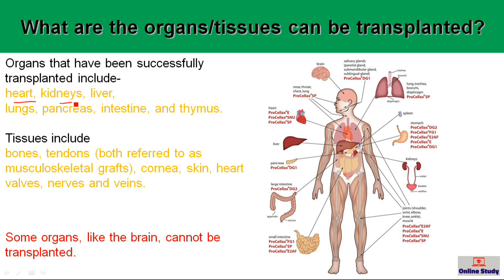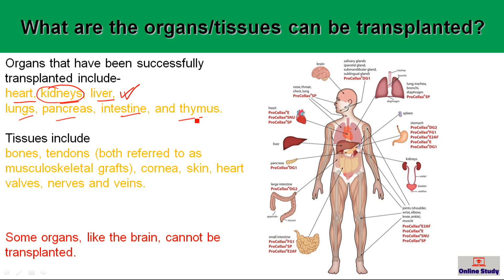How many organs can be transplanted? Today, most organs have been tried for transplantation. For example, the heart, kidney, and liver are the most transplanted organs in the world. Among them, the kidney is the most transplanted. The heart, kidney, and liver are also the most successfully transplanted. Additionally, the lung, pancreas, intestine, and thymus have also been transplanted.